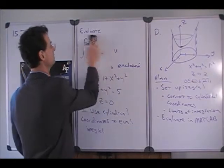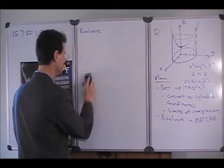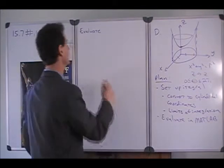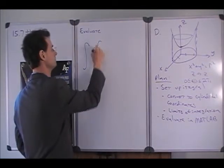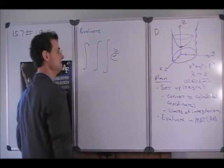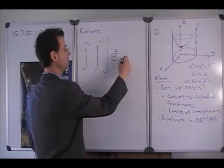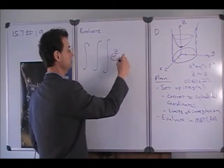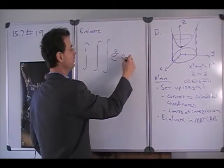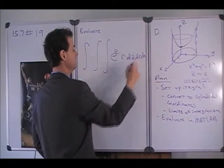Alright, so setting up the integral, triple integral. Well, the integrand e to the z is still e to the z. And our inside variable of integration, we always have an r. And then we can go dz, dr, d theta.